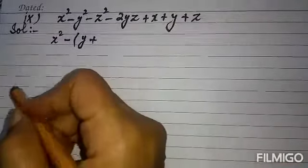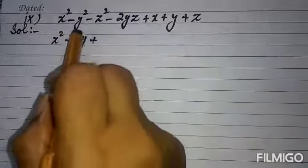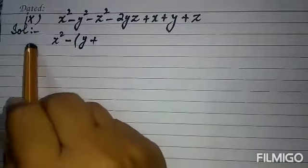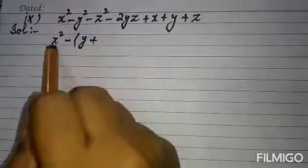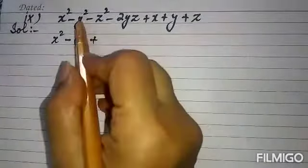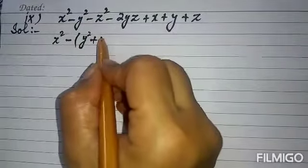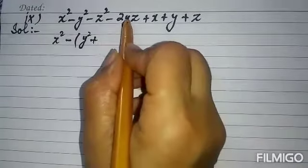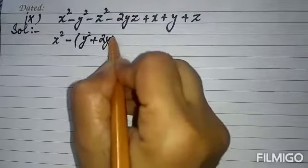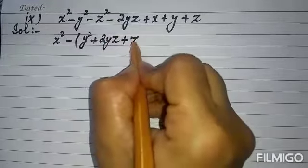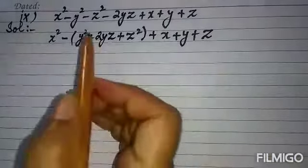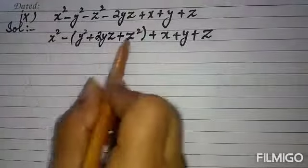The last part of question 2 is X² - Y² - Z² - 2YZ + X + Y + Z. This is completely different from all other questions, so I will solve it fully. X² remains as it is. Taking minus common from -Y² - Z² - 2YZ gives -(Y² + 2YZ + Z²), arranged as -(2YZ + Z²...). Plus X + Y + Z remains as it is.